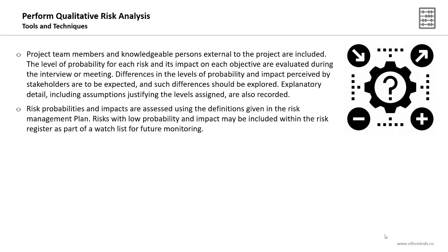Risks with low probability and impact may be included within the risk register as part of a watch list for future monitoring. The watch list is a key outcome of performing qualitative risk analysis. It is the part of the risk register that includes all risks with low ranking — low priority, low impact, or low probability — all documented for future monitoring.